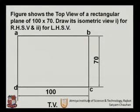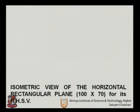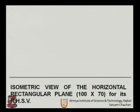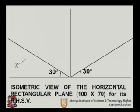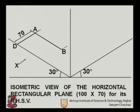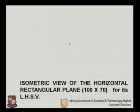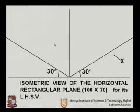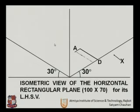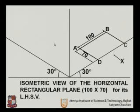Now we see the top view of a rectangular plane given as 100 by 70 mm, and we draw its isometric view for both left-hand side view and right-hand side view. For the RHSV, we begin with the isometric axis. We complete points A to B, C to D, and for the left-hand side view, use the other side of the isometric axis to finish and label the points A, B, C, D.